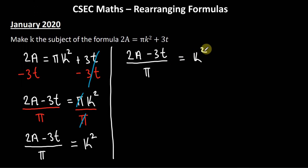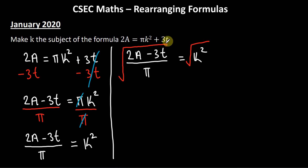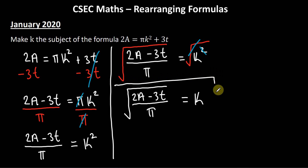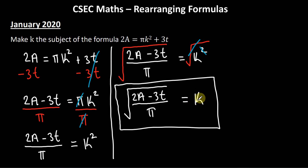They want us to make k the subject, not k², so I need to get rid of the square symbol by taking the square root of both sides. The square root cancels the square, and we're left with k = √((2a − 3t)/π). This is our answer — we have made k the subject with k on one side of the equal sign by itself.